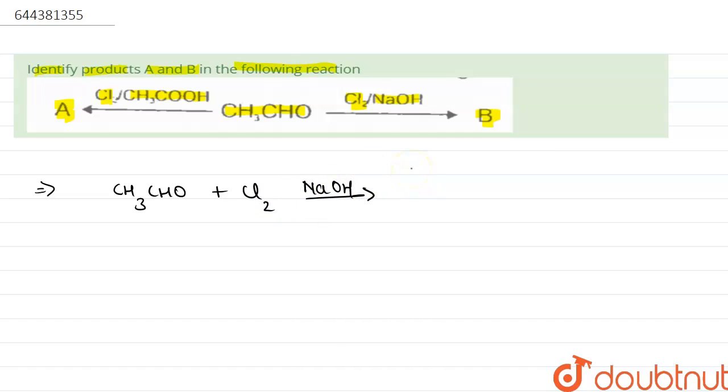The aldehyde on treatment with excess of halogen in presence of alkali produces a haloform. In this reaction, all the 3-hydrogens of the methyl group are first replaced by the halogen atom to form a trihalo aldehyde, which reacts with alkali to give a haloform and a salt of carboxylic acid which contains one carbon atom less than the starting aldehyde.